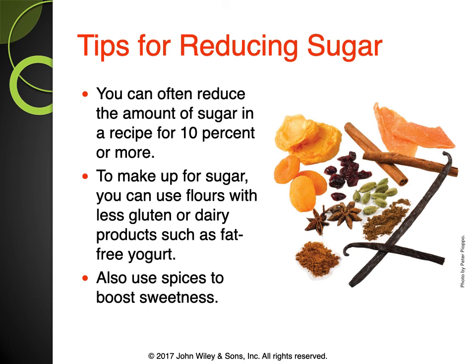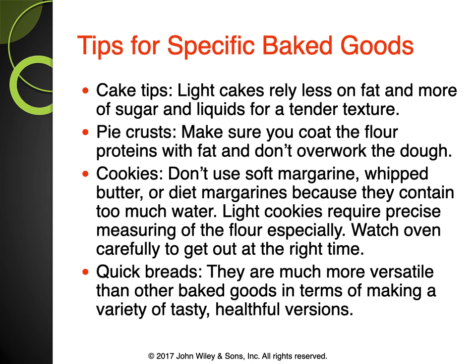Tips for reducing sugar: one great tip is that if you're making something with fresh fruit, allow that fruit to be as ripe as possible before baking — it will have more natural sugar because it's ripened, so you can then use less added sugar.